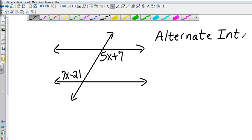If those lines are parallel, alternate interior angles are congruent. So I would take 7x minus 21 and set it equal to 5x plus 7.